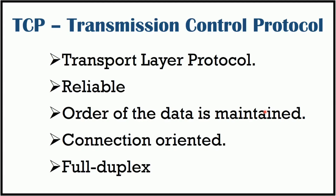TCP ensures that data reaches the intended destination in the same order it was sent. It numbers and sequences each segment so that the destination TCP protocol can reassemble segments in the intended order. It is a connection-oriented service because data exchange can only happen after connection establishment, and after data transmission the connection must be terminated. It offers full duplex service where data can flow in both directions at the same time. It is a stream-oriented protocol which allows the sending process to deliver data as a stream of bytes and the receiving process to obtain data as a stream of bytes, creating a virtual circuit that carries bytes across the internet.